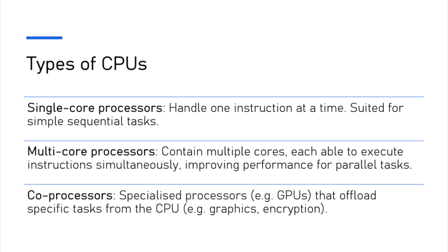Examples of coprocessors include GPUs, audio processors, digital signal processors, and machine learning algorithm processors. A common mistake is thinking that adding more CPU cores always makes a computer faster — for example, that a dual core CPU is always twice as fast as a single core. This isn't always true because the speed increase depends on how well the software can use multiple cores. Often programs aren't designed to take full advantage of multiple cores, so the extra cores may not make a noticeable difference. Other factors including memory speed and CPU design communication pathways also impact core performance.